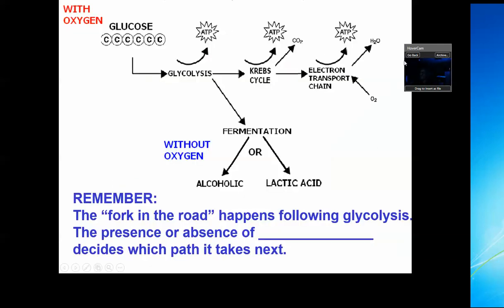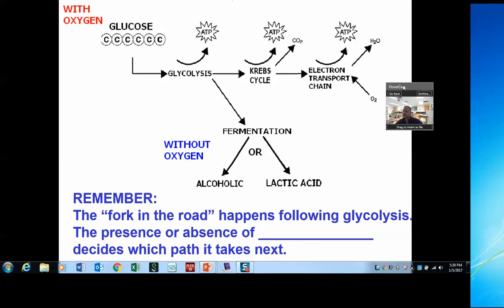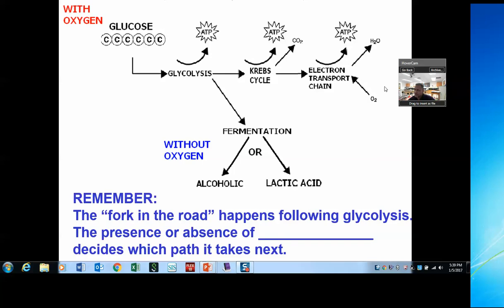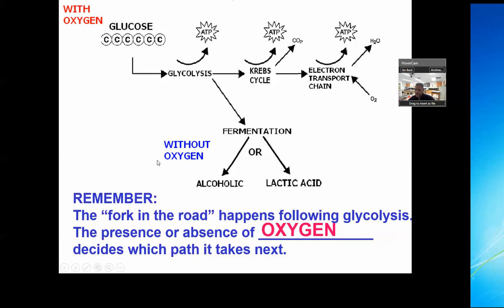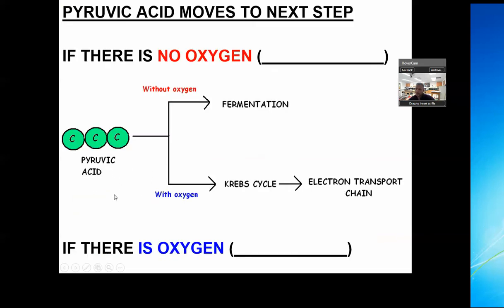Without oxygen, we do fermentation — that's anaerobic respiration. Glycolysis starts both pathways, producing pyruvic acid in a kind of holding pattern. When glucose enters a cell, it's immediately broken in half through glycolysis. Without oxygen, you stay in the cytoplasm and break it down there. If oxygen is available, you go into the mitochondria. There are two types of fermentation — let's talk about them.